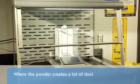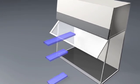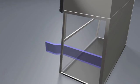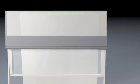Where the powder creates a lot of dust, laboratory air is drawn to the back of the enclosure through the sash opening and then is pulled to the back of the unit. The air is then pulled through a HEPA filter collecting all the harmful particulates before exiting the enclosure.